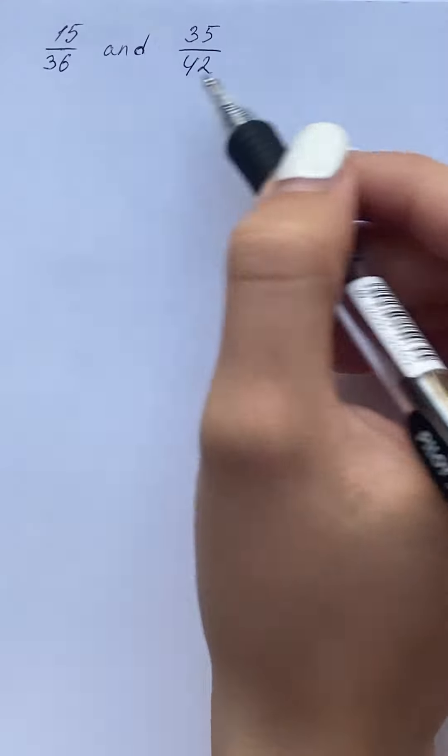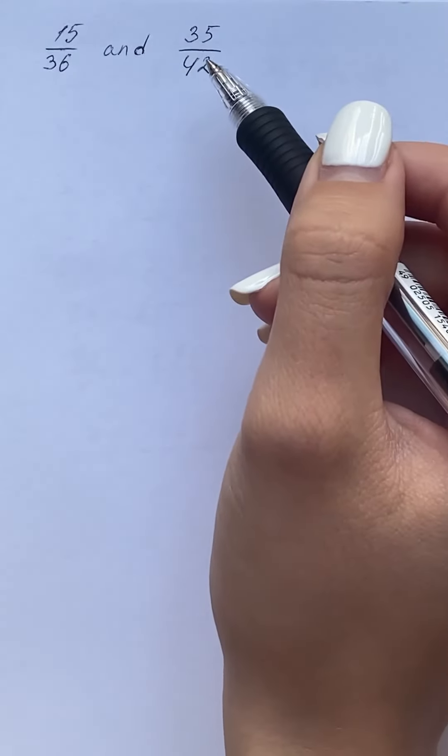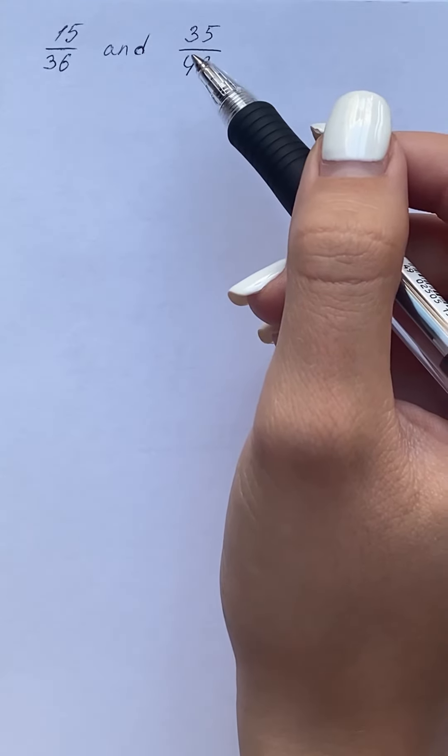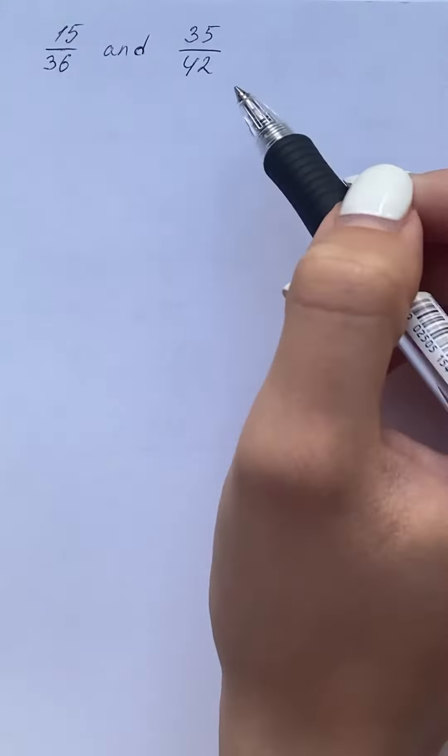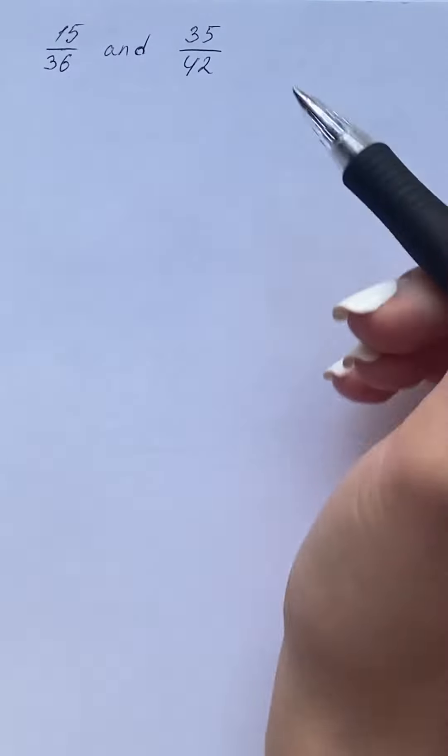In order to check whether the given fractions are equivalent or not, we're going to reduce both fractions to simplest form and then check whether both fractions are equal or not.